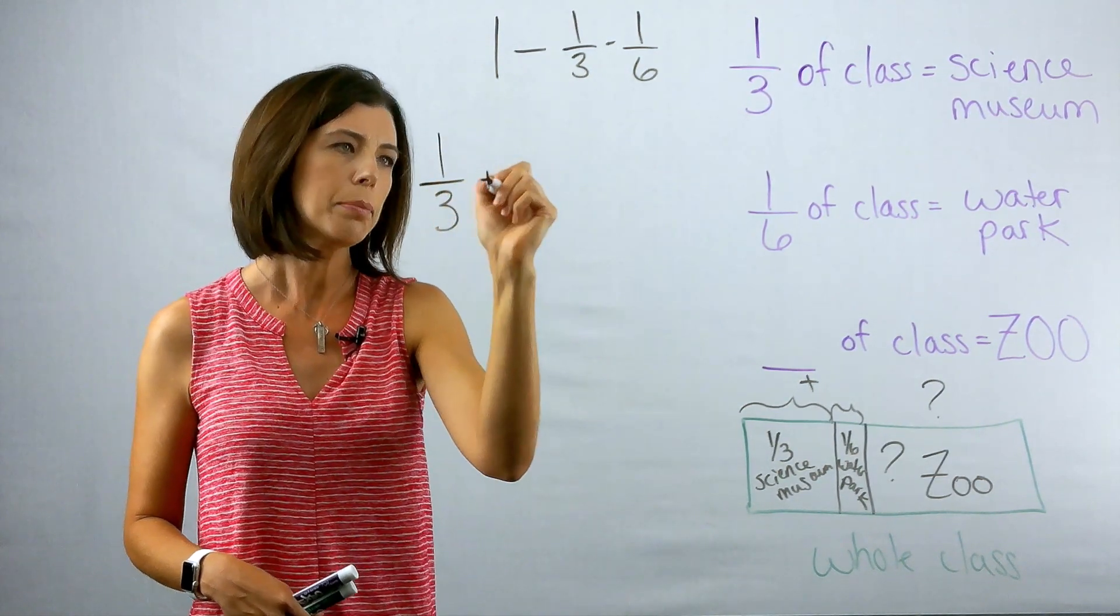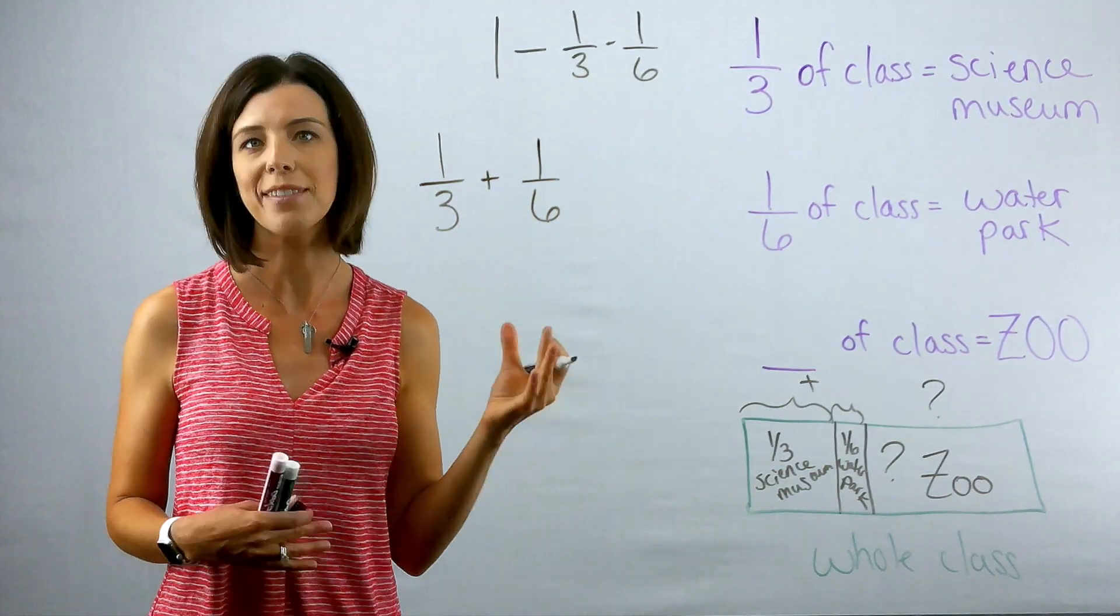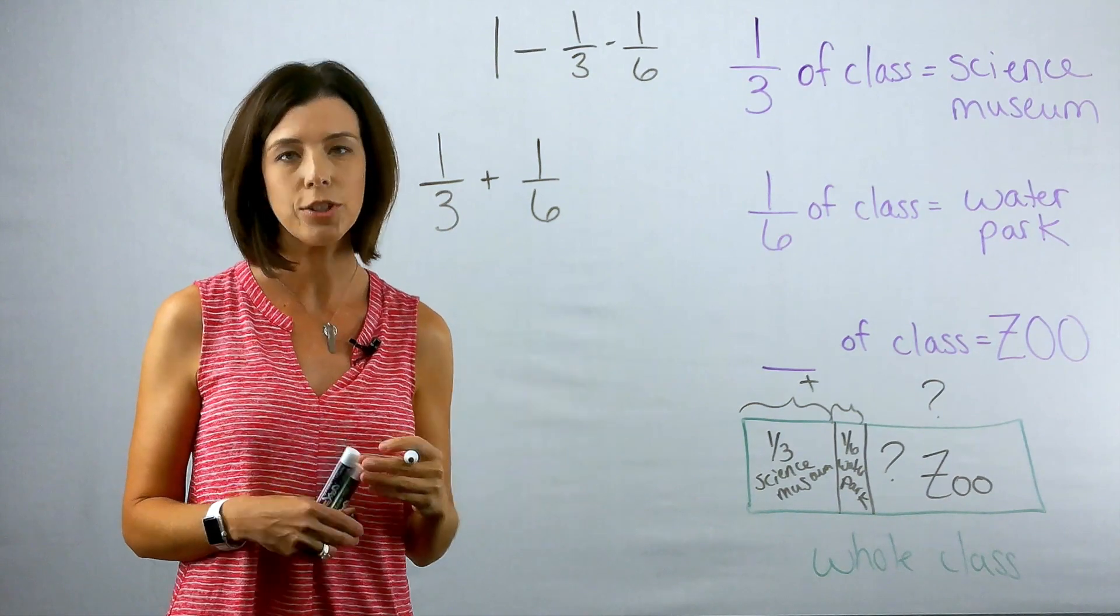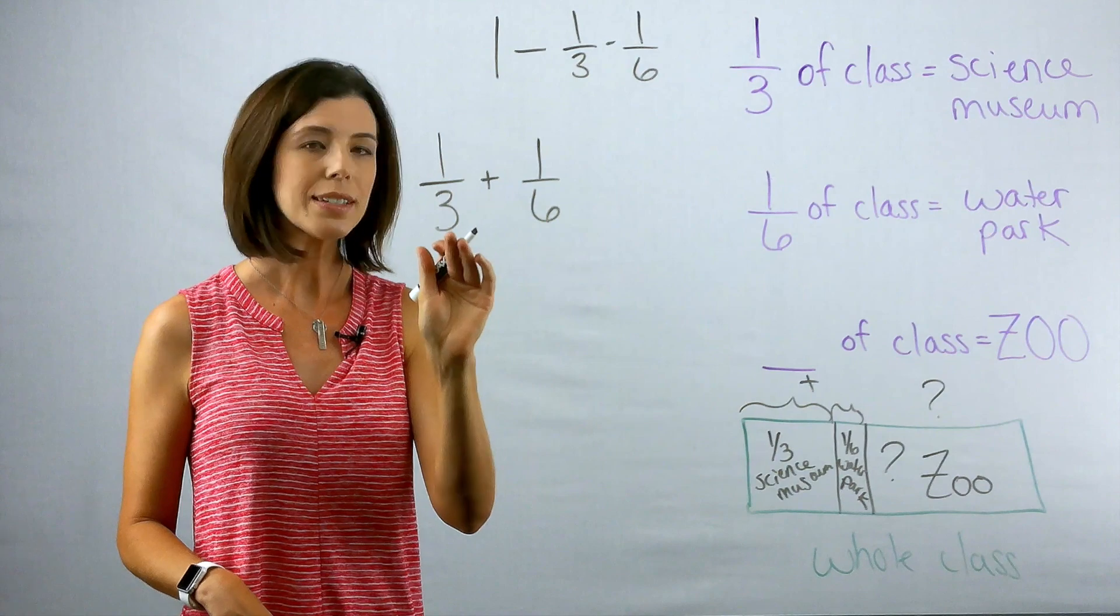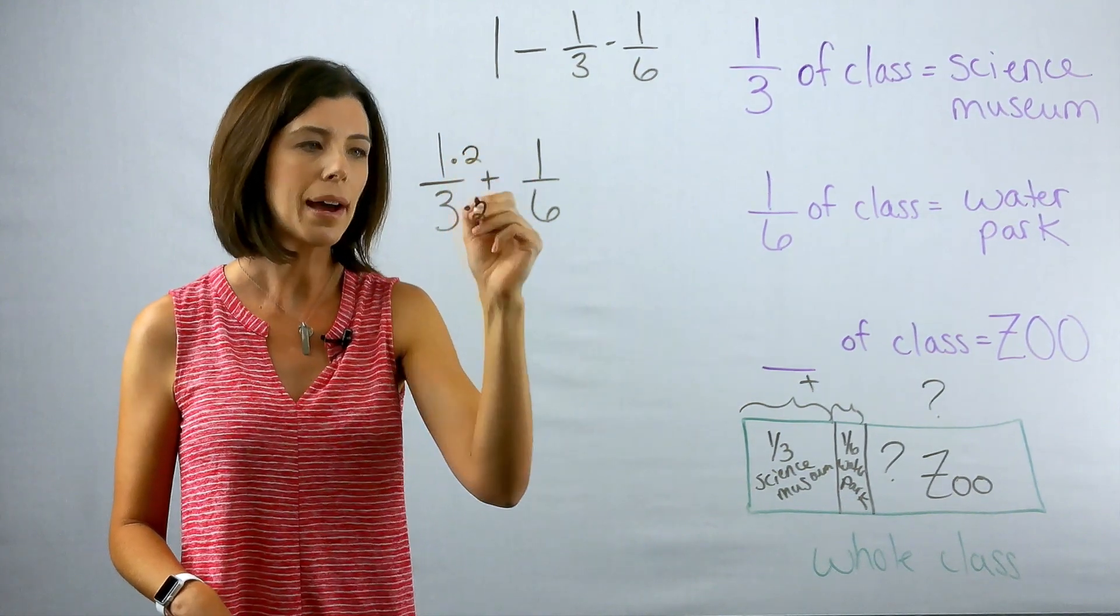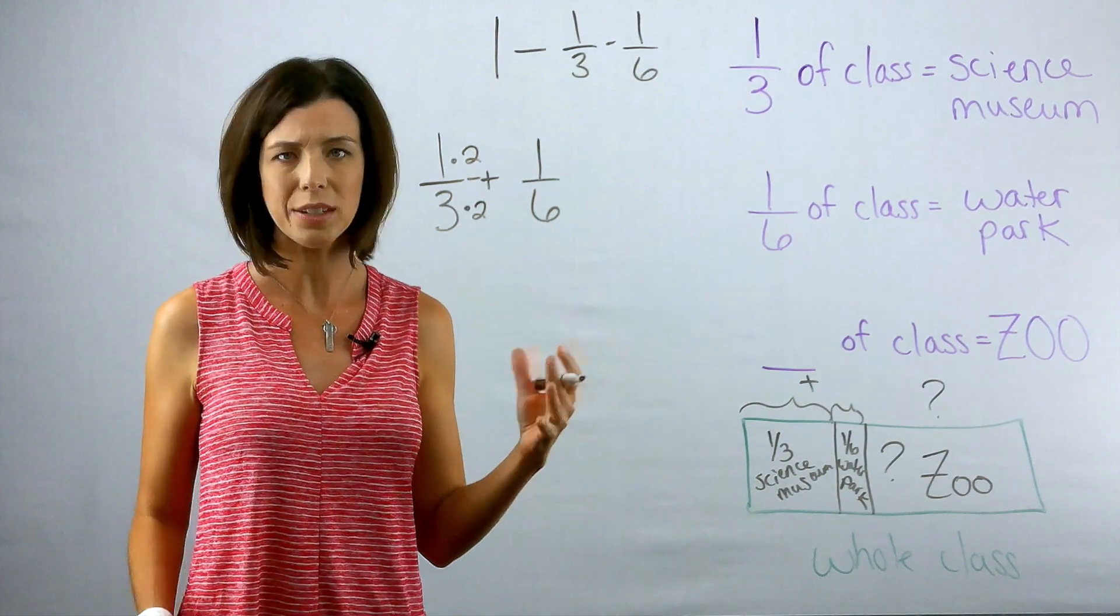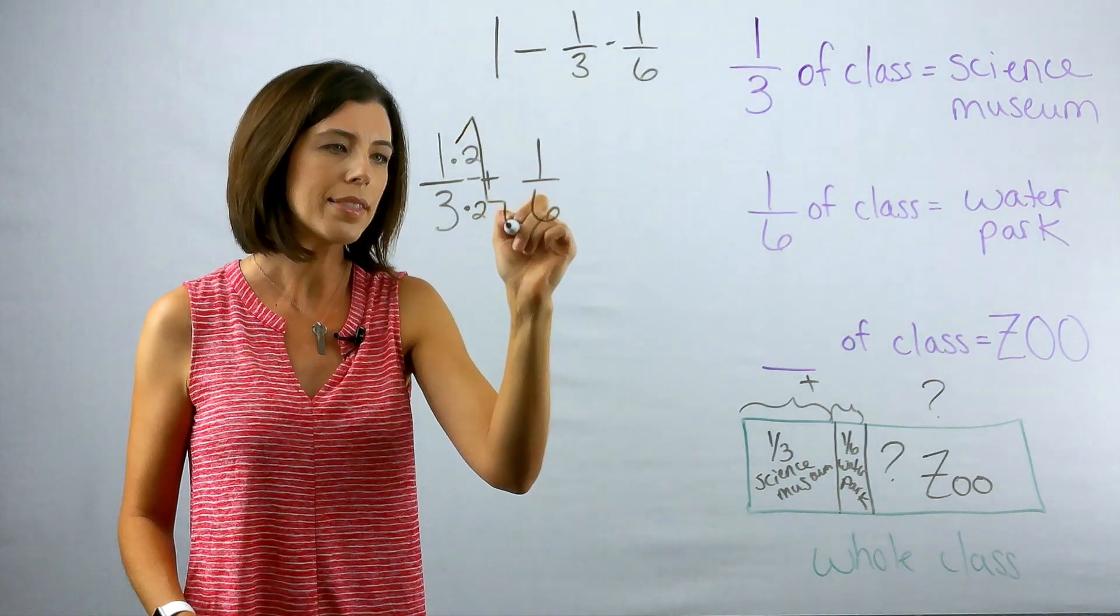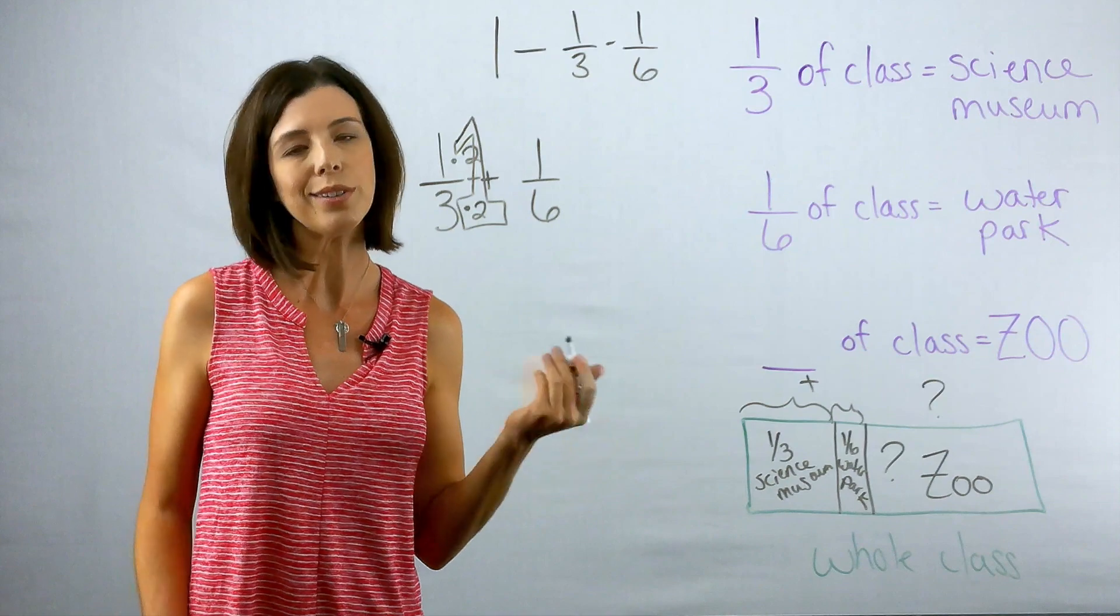So I have one-third plus one-sixth. And I know that when I add fractions, I have to have common denominators. I have to be comparing and combining fractions that have the same number of pieces. So I know that six is a multiple of three, so I'm going to multiply the top and the bottom by two over two. Now why are you allowed to just multiply this fraction by any number? Because when you multiply it by the same number on the top and the bottom, you're really multiplying it by one. You didn't change it any.